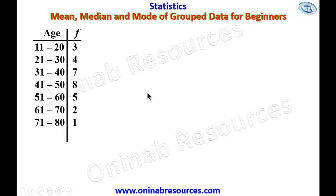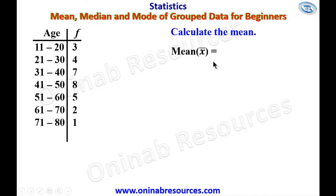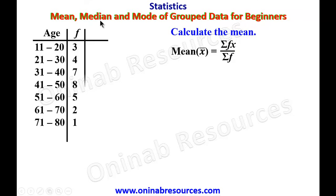We have to calculate the mean. The formula for the mean is the summation of fx over the summation of f. In this column we have f. We need two additional columns — the column for x, where x is the mid-value of each class interval.